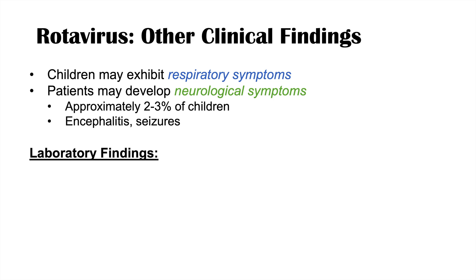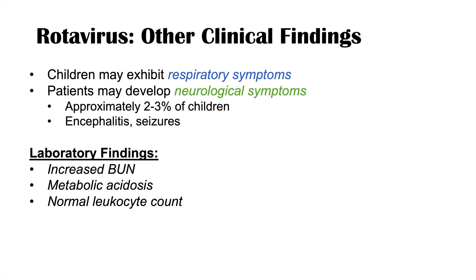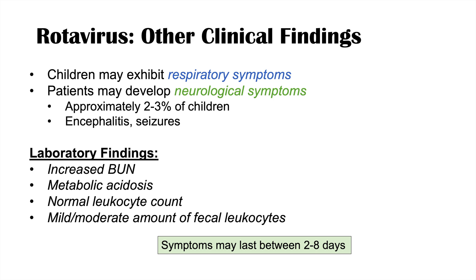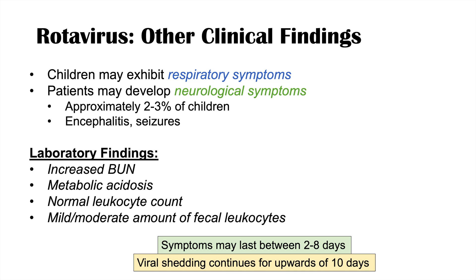Specific laboratory findings include increased BUN (blood urea nitrogen), indicating dehydration, and metabolic acidosis. However, the white blood cell count is normal — there is no leukocytosis, even with fever and systemic illness. Stool may show a mild to moderate amount of fecal leukocytes in some patients. Symptoms generally last between 2 to 8 days. Infected individuals can shed the virus for upwards of 10 days, meaning even recovered patients can still infect others.